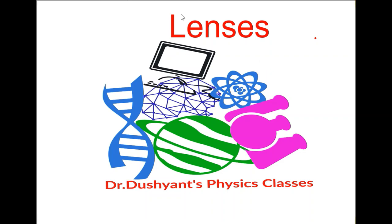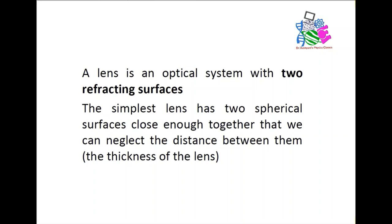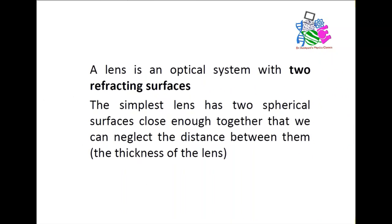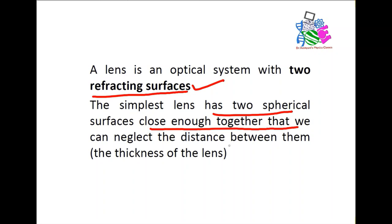So, what are lenses actually? Lenses are spherical surfaces which are refracting. A lens is an optical system that has two refracting surfaces. The simplest lens has two spherical surfaces closed enough together that we can neglect the distance between them.